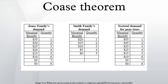Since the 1960s, a voluminous amount of literature on the Coase Theorem and its various interpretations, proofs, and criticism has developed and continues to grow.